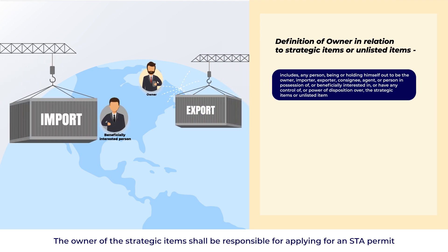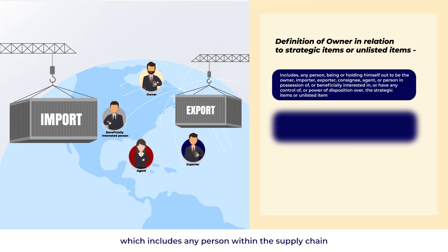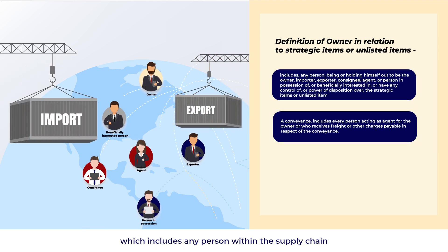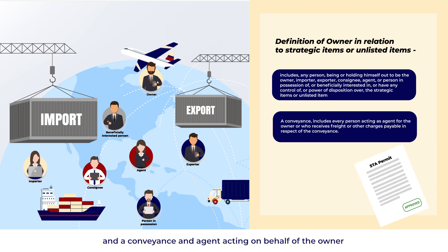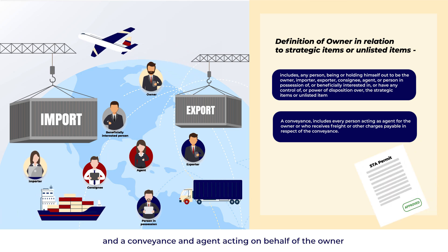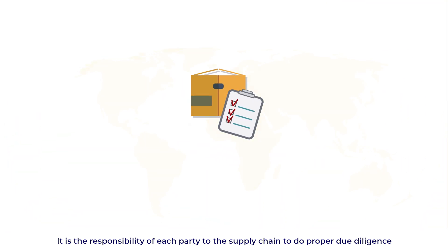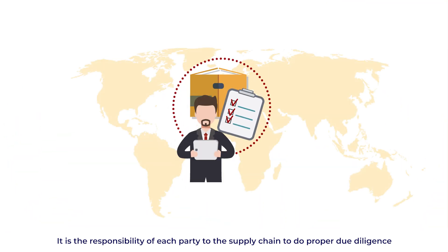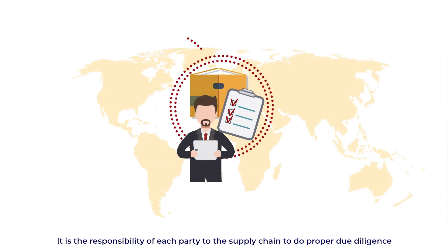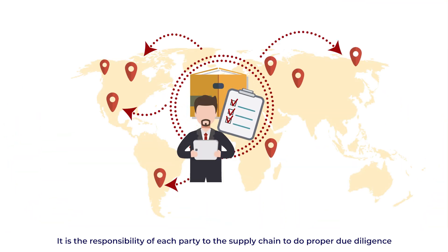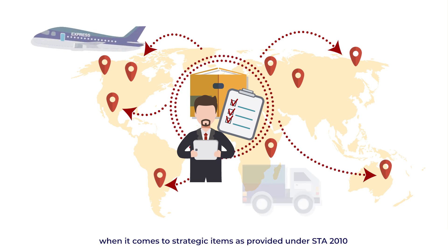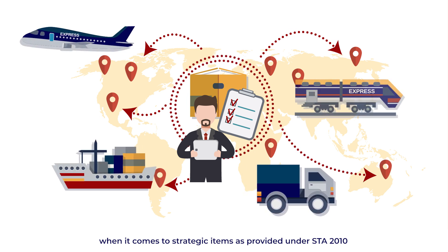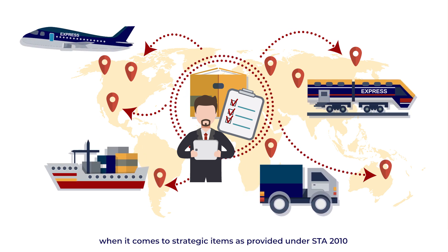The owner of the strategic items shall be responsible for applying for an STA permit, which includes any person within the supply chain, and a conveyance and agent acting on behalf of the owner. It is the responsibility of each party in the supply chain to do proper due diligence when it comes to strategic items, as provided under STA 2010.